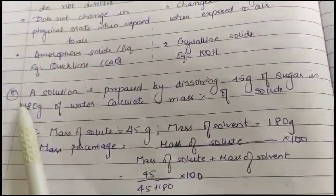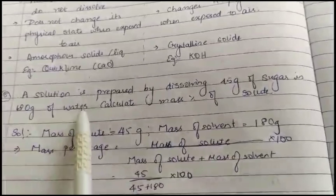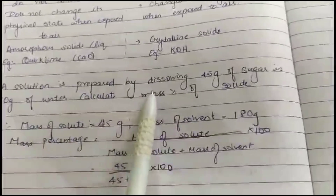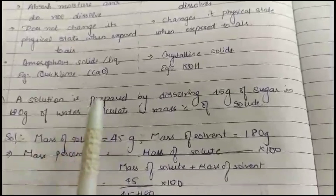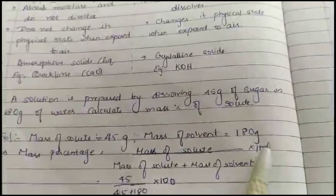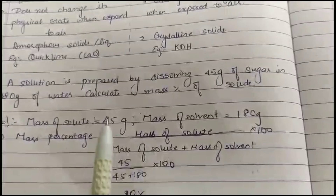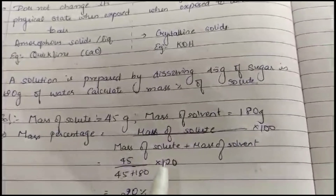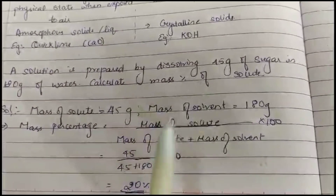Problem 1: A solution is prepared by dissolving 45 grams of sugar in 180 grams of water. Calculate the mass percent of solute. Using the formula: mass percent equals mass of solute divided by (mass of solute plus mass of solvent), multiplied by 100. That is 45 divided by (45 plus 180), into 100, which equals 20 percent.